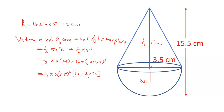2 into 3.5 is 7. 7 plus 12 is 19. One-third, and 3.5 squared is 12.25 into 12, giving us 19.